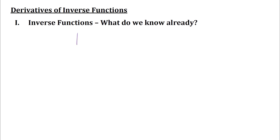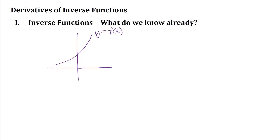I'm going to start here with a graph of a function — y equals f of x — and think about the inverse of that function. This function appears to possibly have an inverse. It passes the horizontal line test, so it's one-to-one, which means we could actually have an inverse function.